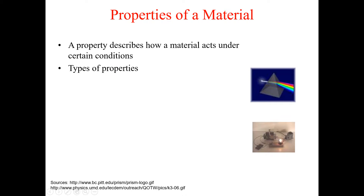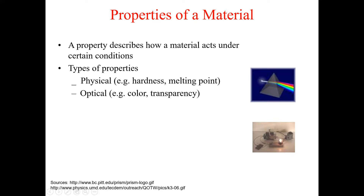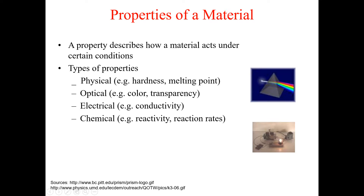Types of properties normally include physical properties. Examples of physical properties include hardness, melting point, and boiling point. Optical properties describe how nanomaterials respond when we shine light on them — a good example includes color and transparency. Then we have electrical properties: how a particular material responds when we apply an electric field, with examples being conductivity and resistivity. Then we have chemical properties — how the material is chemically reactive — and examples include reactivity and reaction rate.